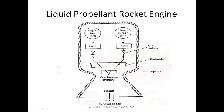Now let's move forward to the liquid propellant rocket engine, shown in this slide. The main components are two different tanks to store fuel and oxygen, a pump for each tank, control valves for each tank, and a preheater. The preheater is required to vaporize the propellants before they reach the combustion chamber. An injector mixes the fuel and oxidizer together and injects them into the combustion chamber where combustion takes place.